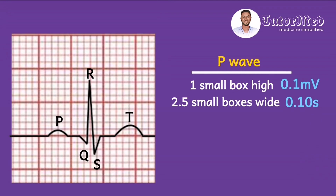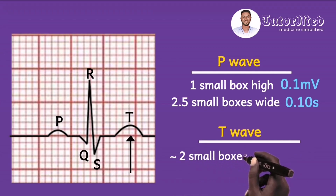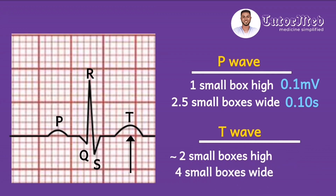To state the P wave in units of measurement, it is 0.1 millivolts high and 0.10 seconds wide. How do we arrive at 0.10 seconds? Every small box is 0.04 seconds, and the P wave occupies 2.5 small boxes, so it is 2.5 times 0.04 seconds. For simplicity, if the P wave is approximately two small boxes high and four small boxes wide, that is two millimeters high and four millimeters wide — approximately 0.2 millivolts high and 0.16 seconds wide.